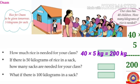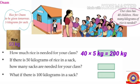Listen to the next question. If there is 50 kilograms of rice in a sack, how many sacks are needed for your class? You know, in your class 200 kilograms of rice is needed. There is 50 kilograms of rice in one sack. So how much rice is there in two sacks? Yes, 100 kilograms. So if there is 100 kilograms of rice, two sacks are needed.